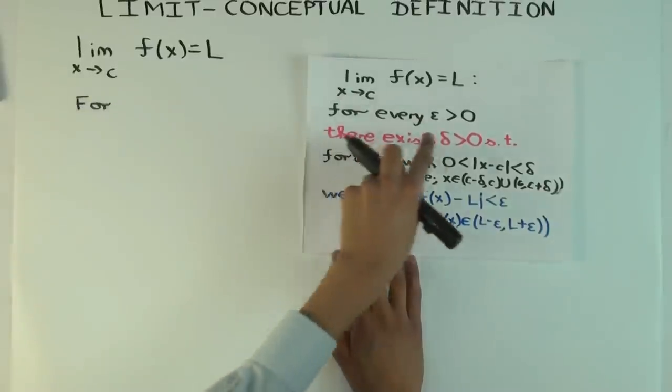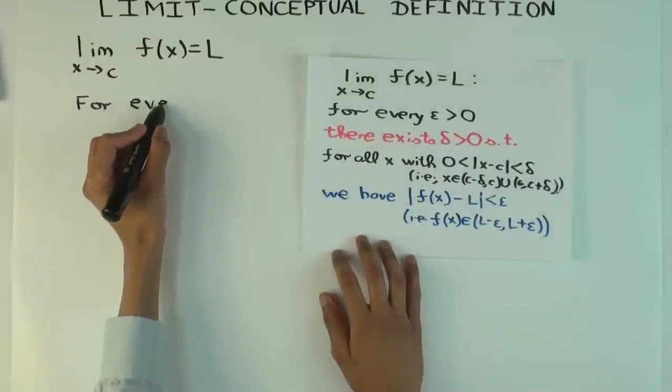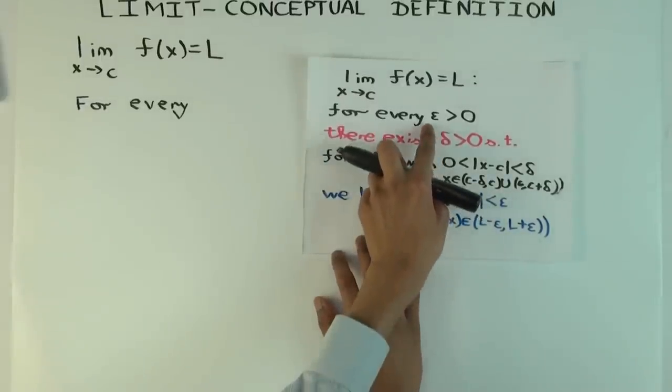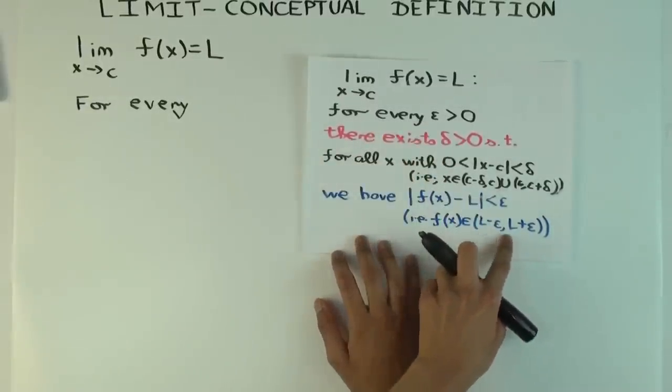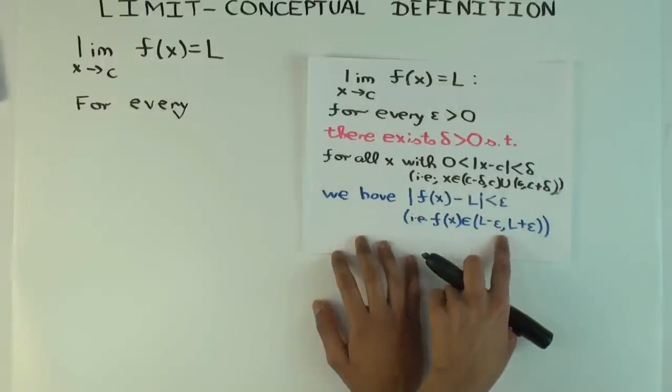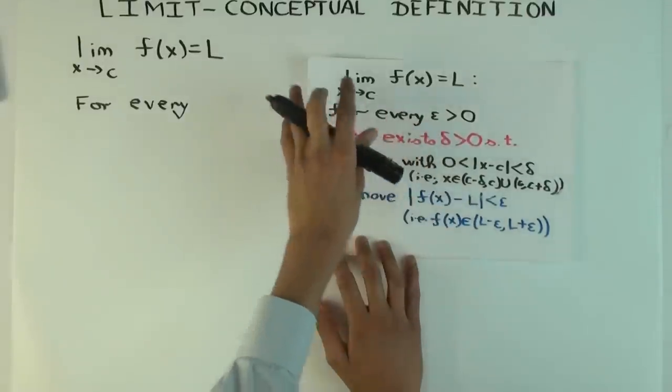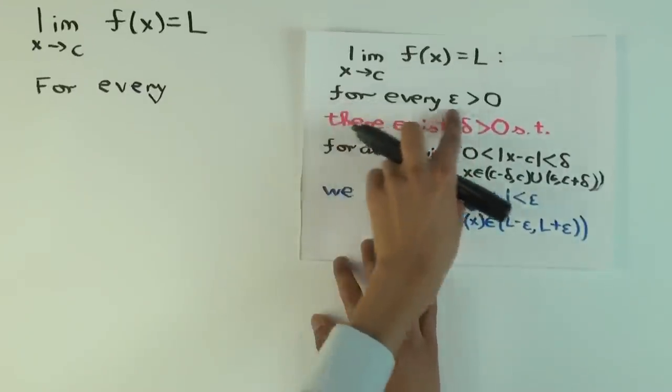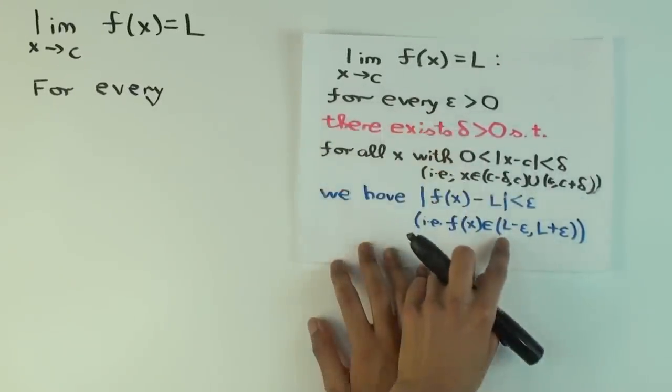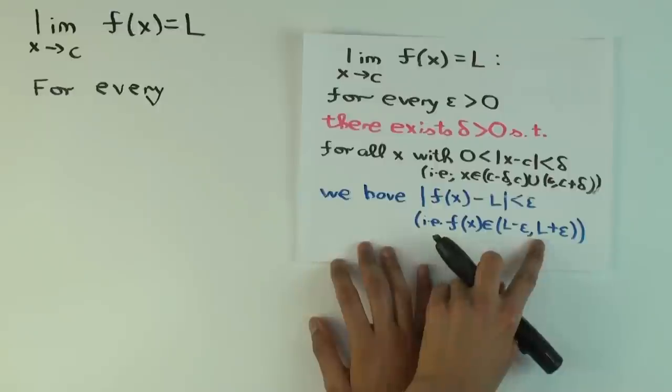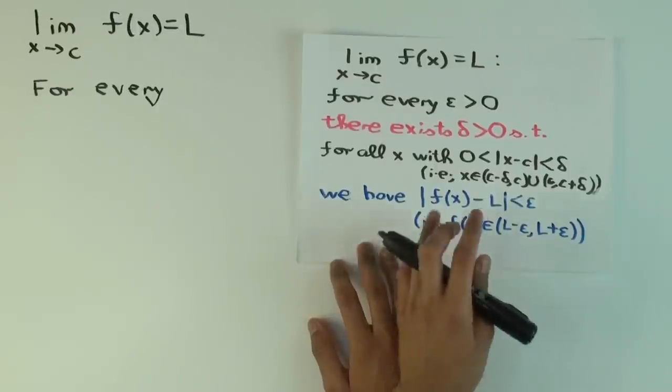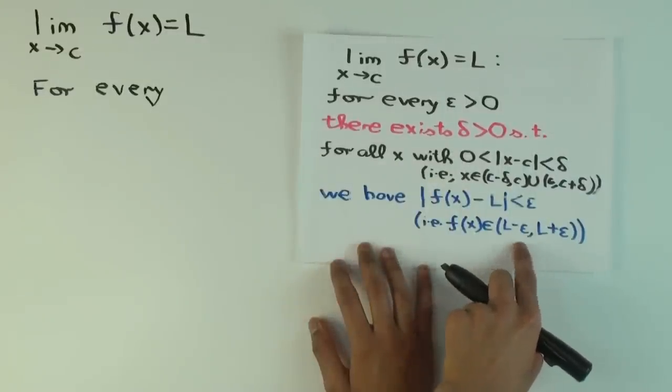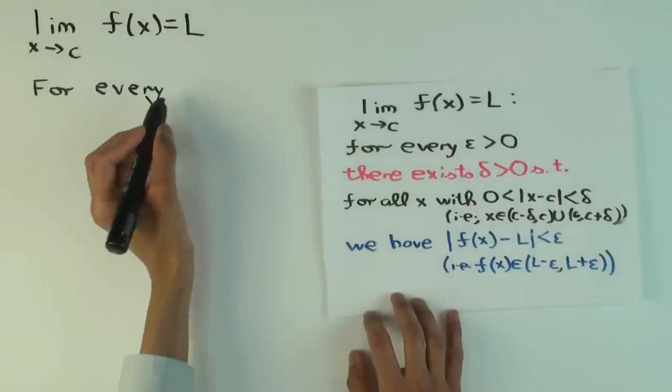For every epsilon greater than zero. But why are we picking this epsilon greater than zero? What's the goal of this epsilon? Where will it finally appear? It will appear here. Which means what we actually are picking when we, or if you've seen the limit as a game video, this first thing is being chosen by the skeptic. Right, and the skeptic is trying to challenge the prover into trapping f(x) within L minus epsilon to L plus epsilon. But even if you haven't seen that, the main purpose of picking epsilon is to pick this interval surrounding L.